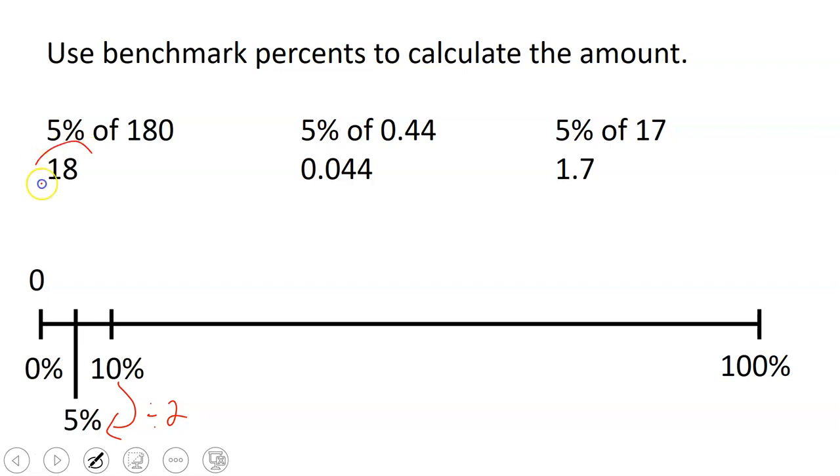So then we take our 10% that we found in the last video, we found that 10% of 180 is 18, and then we take that value and we divide it by 2 to find our 5%. So 18 divided by 2 is 9. So 5% of 180 is 9.